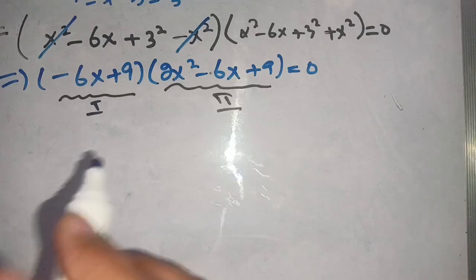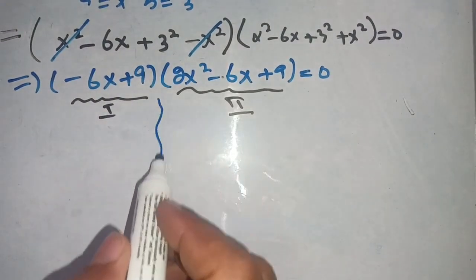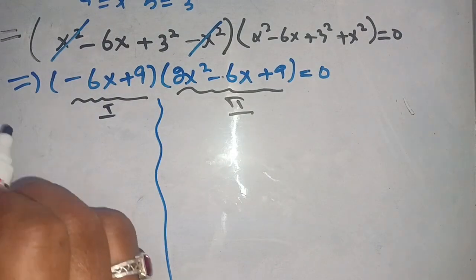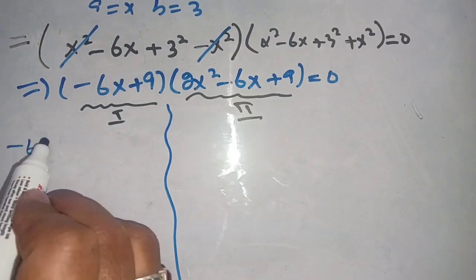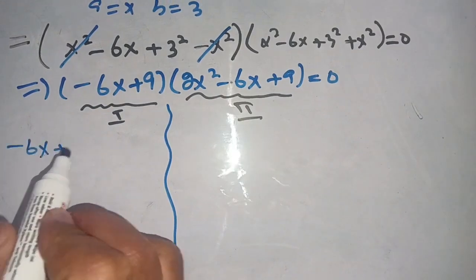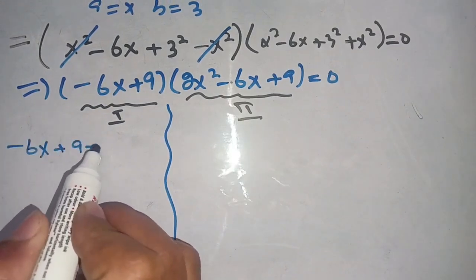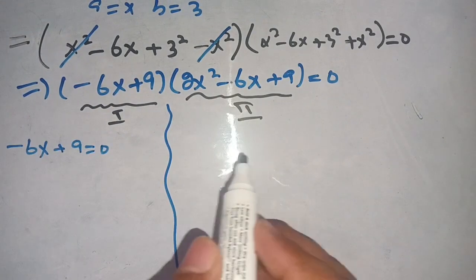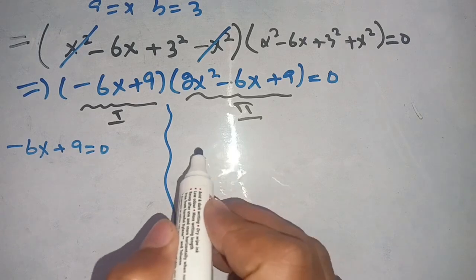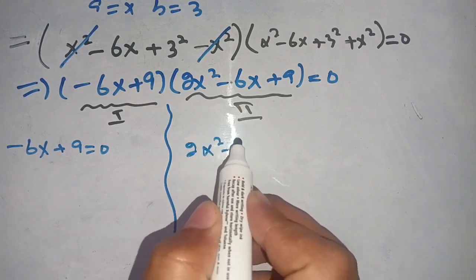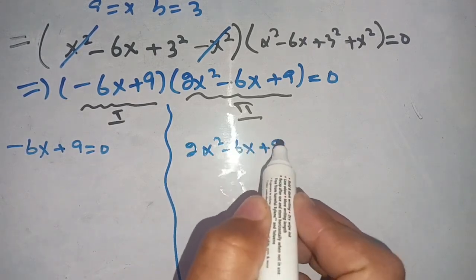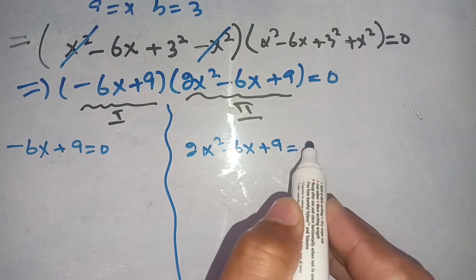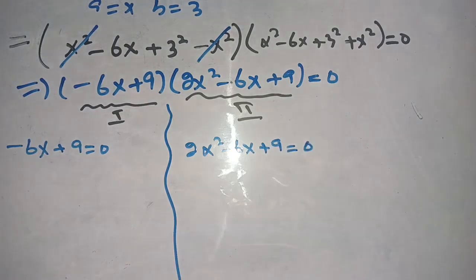We can equate both terms to zero. The first equation is: minus 6x plus 9 equals 0. The second equation is: 2x squared minus 6x plus 9 equals 0.